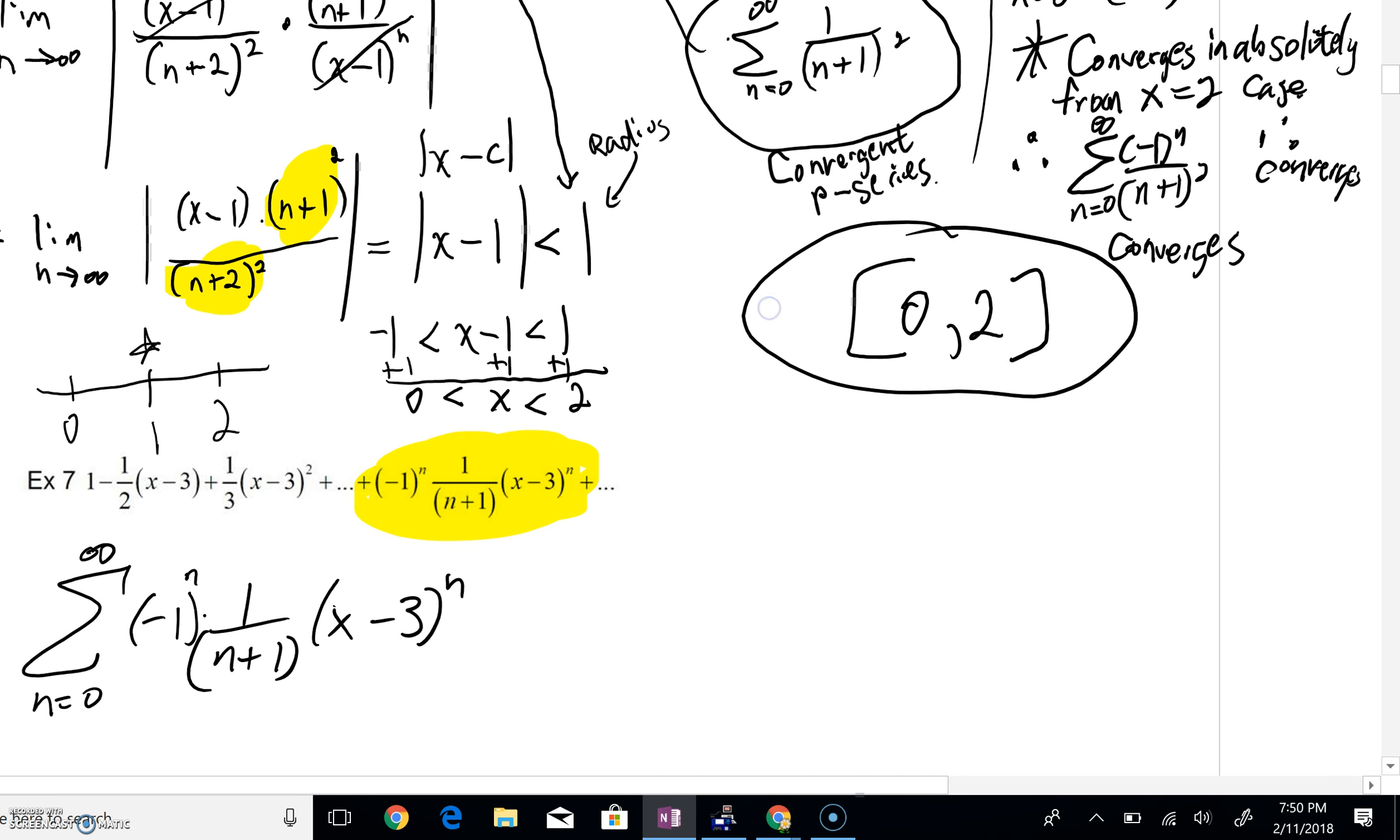To finish up for example seven, I just want to show you that very often you might not be given a sigma. And this can get very intimidating, they'll write out term by term by term, and then they'll write this very abstract nth term.